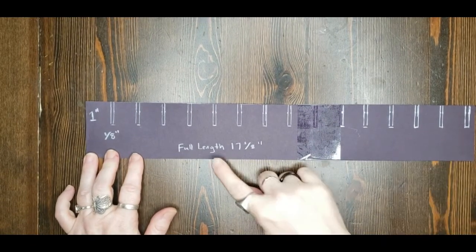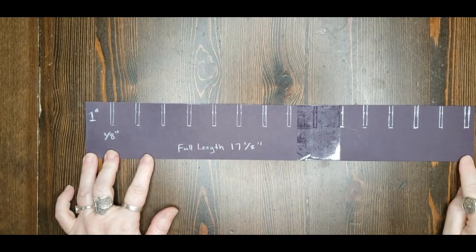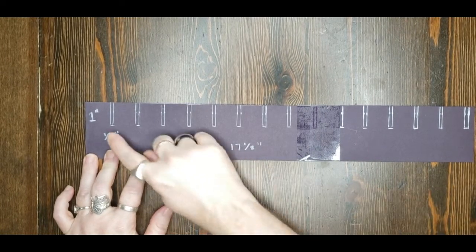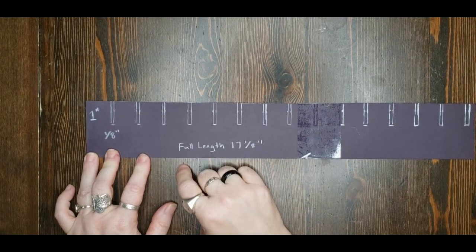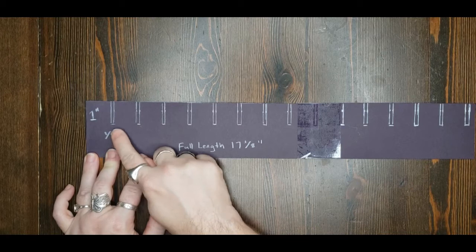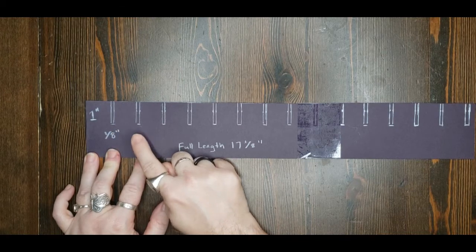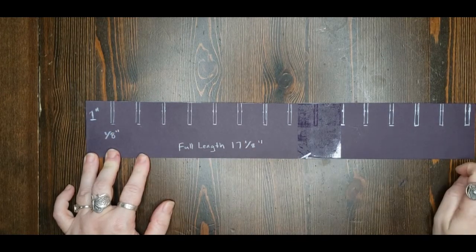To begin our zoetropes, we need a dark piece of paper 17 1/8 inch long by 2 1/2 inches high. We're going to have 1 inch between each of the notches, and the notches are going to be 1/8 of an inch by 1 inch deep, all the way down the paper.